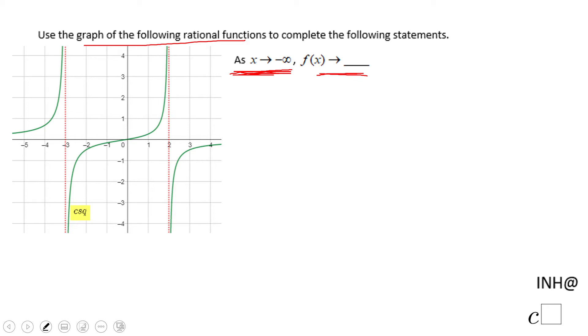x approaching negative infinity means this side of the graph, going that way. What do you notice about the graph? The graph is getting closer and closer to the x-axis, which means the value of the function is getting closer and closer to zero. So that's what you need to do.